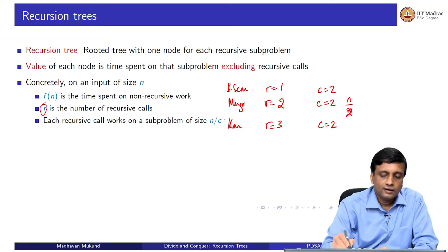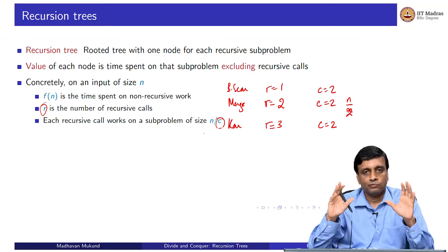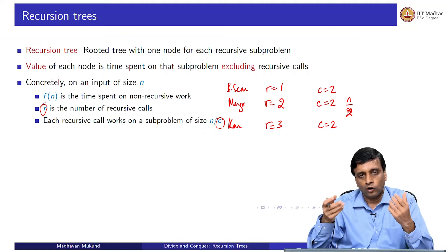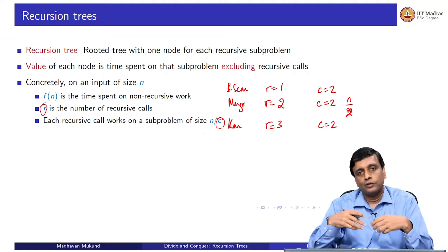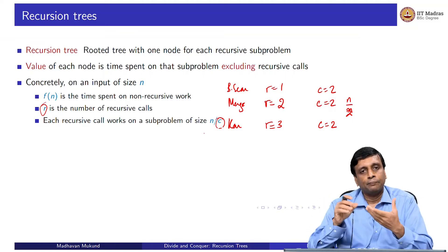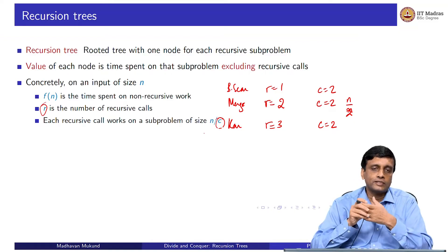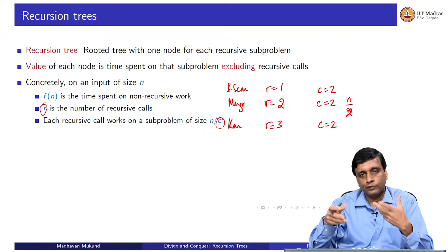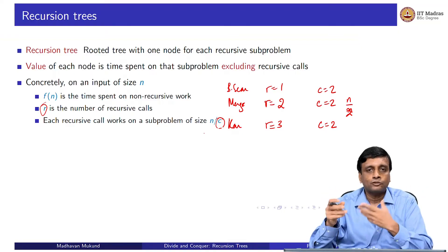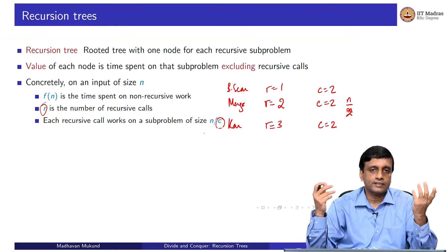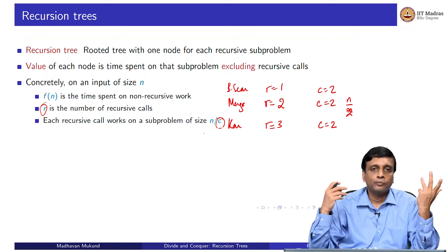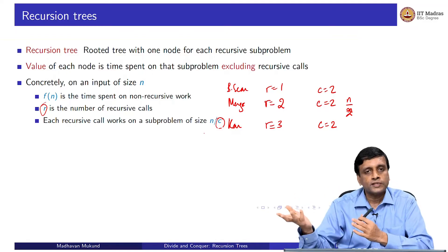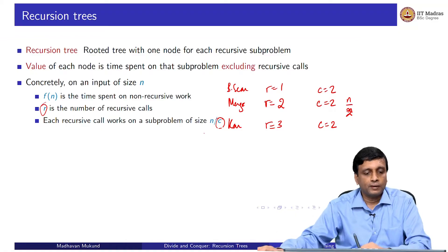In sorting it seems strange to sort half the array three times since there are only two halves, but in multiplication we are actually multiplying three different quantities of half the size — they are not directly contributing to the answer, but rather the answer is some clever combination of these. That is why we can have more subproblems than the number of parts. The recurrence is: to solve a problem of size n, break it into r subproblems each of size n/c, spending f(n) on the non-recursive splitting and combining.